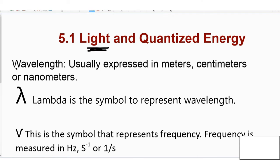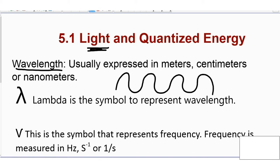Wavelength is the distance from the top of a wave to the bottom of a wave. For example, if this is a wave, the wavelength would be the distance from here to here, or from here to there. That's a wavelength. And wavelength is represented by the symbol lambda.